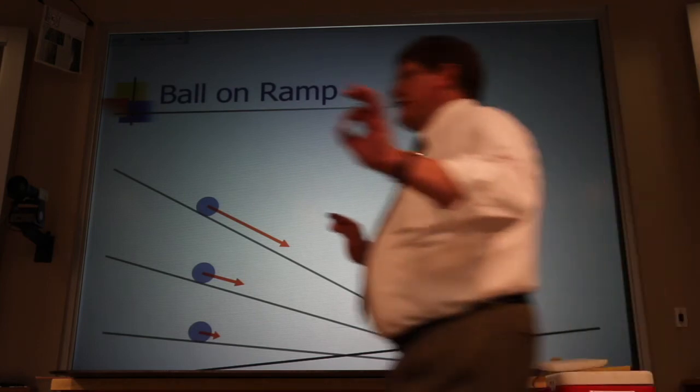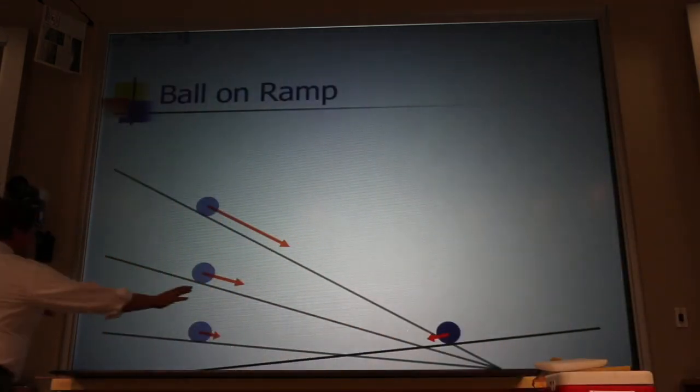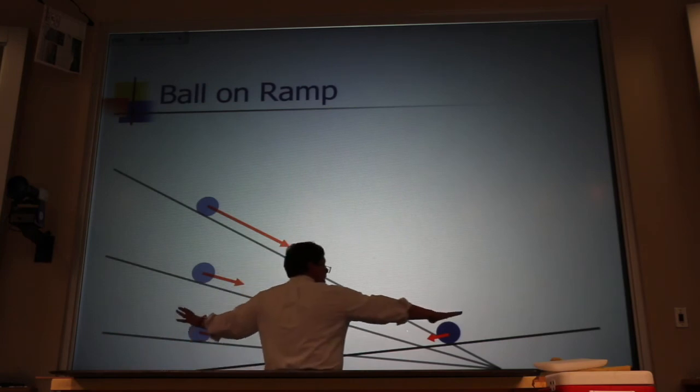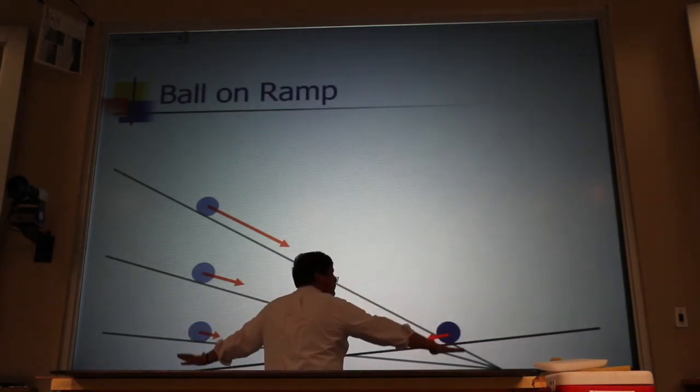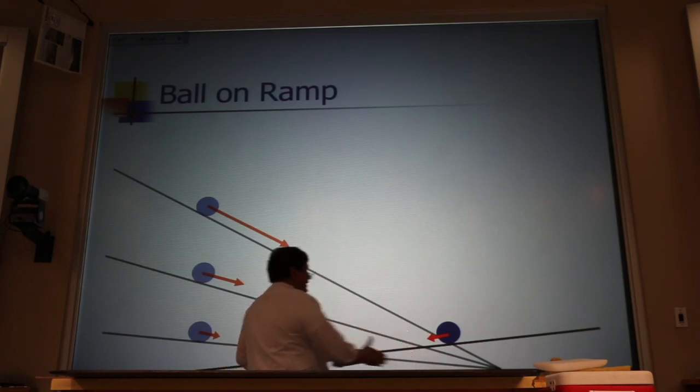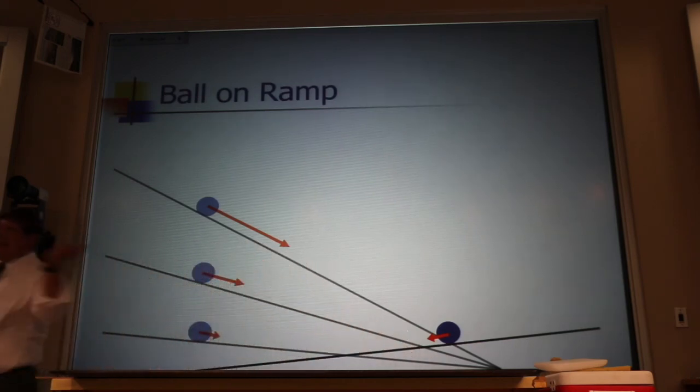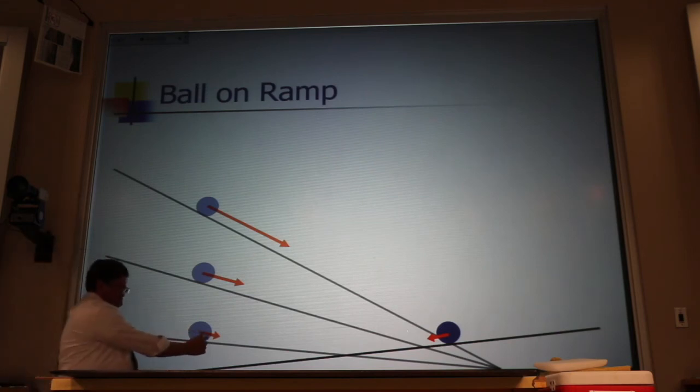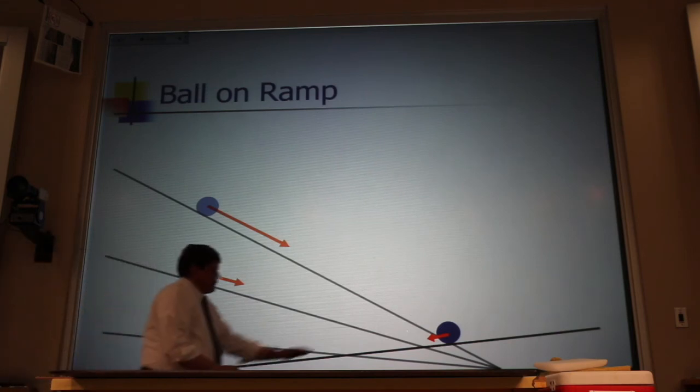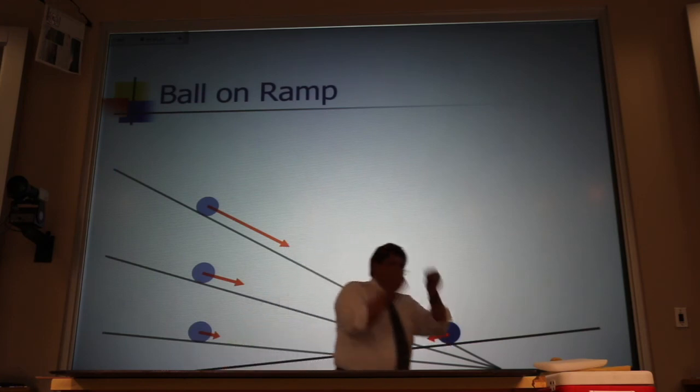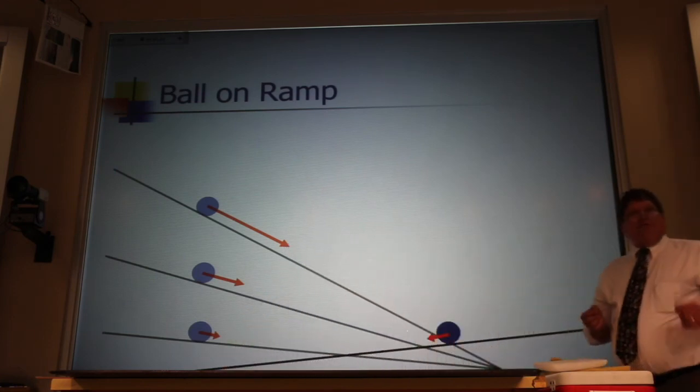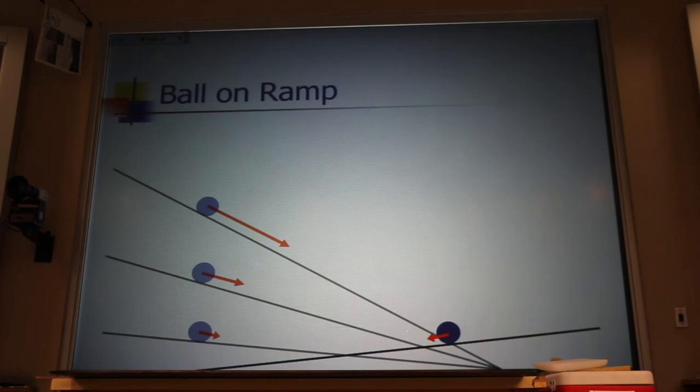Now, this is what Galileo did. He took these two cases here, and he made those two ramps more and more and more shallow until they met at level. Now, the more shallow he got this one, the smaller that arrow to the right became. The more shallow he got that one, the smaller this arrow to the left became. The only thing that he could figure out that it must be when they met in the middle was zero.